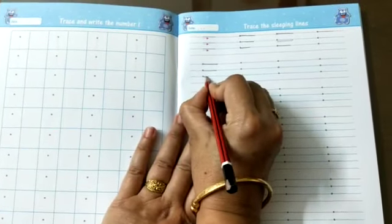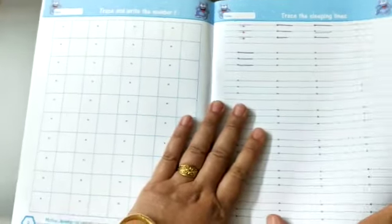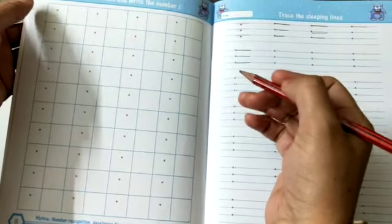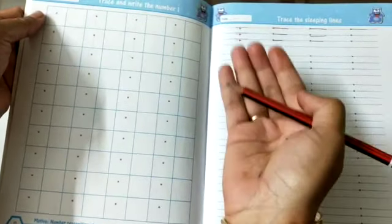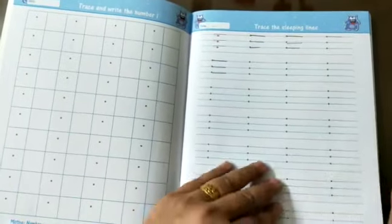The child must keep on saying 'sleeping line,' otherwise it will become very difficult for him to recognize whether it is a sleeping, standing, or slanting line. Okay, so finish this page then shift to the next page.